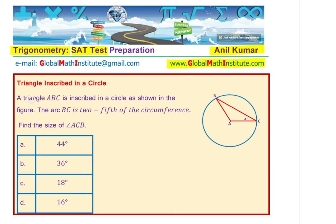A triangle ABC is inscribed in a circle as shown in the figure. The arc BC is two-fifths of the circumference. Find the size of angle ACB.